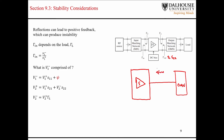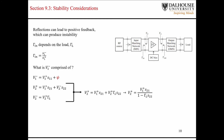The backwards traveling wave on the output side is going to be the amount of energy reflected off the output matching network. If we assume the output matching network has reflection coefficient gamma L, then the backwards traveling wave on the output side equals the forward traveling wave times the reflection coefficient. We can combine these and solve for an expression for the output forward traveling wave in terms of the S21 and S22 parameters and the reflection coefficient.